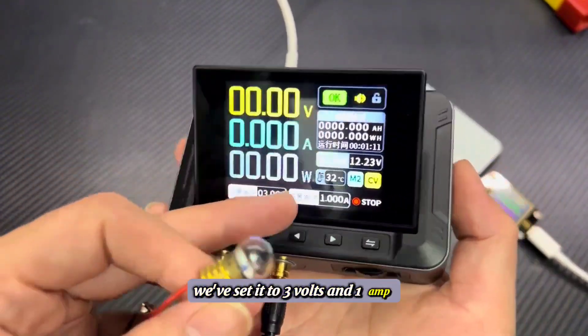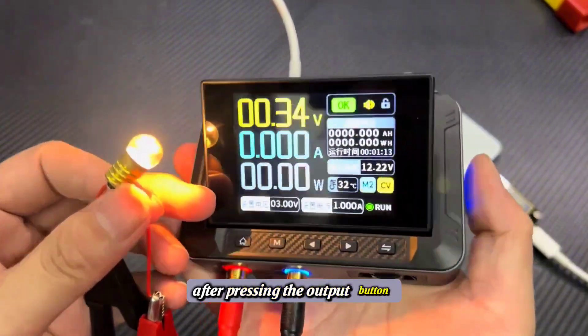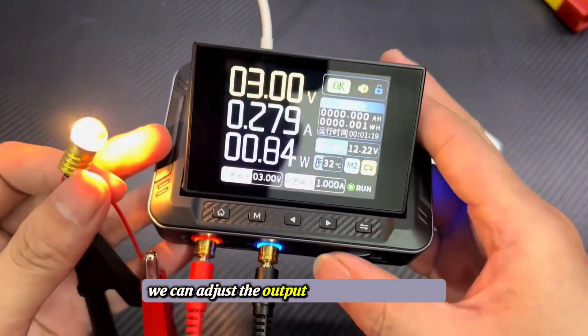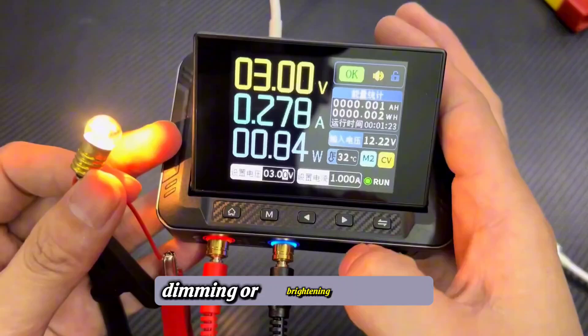Let's demonstrate using a small light bulb. We've set it to three volts and one amp. After pressing the output button, the bulb lights up, drawing 0.278 amps. We can adjust the output voltage dynamically, dimming or brightening the bulb.